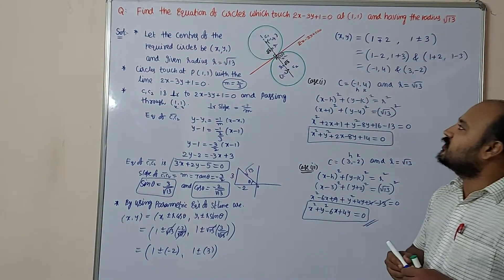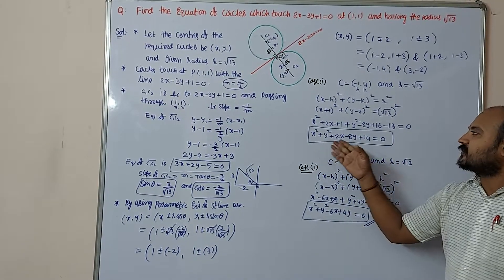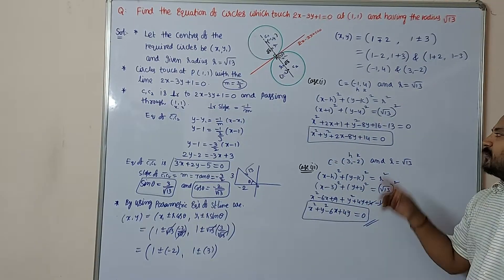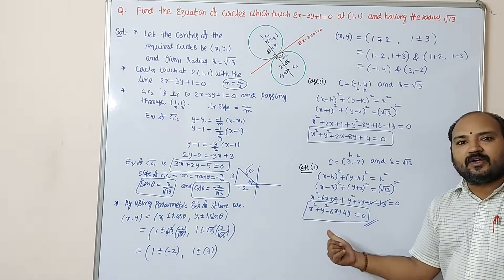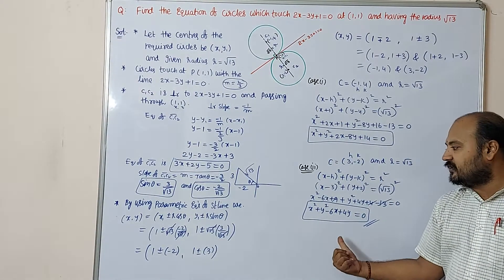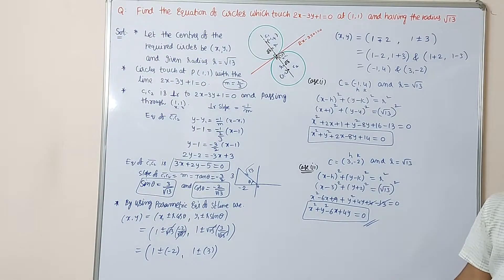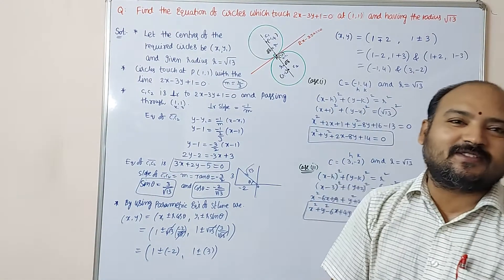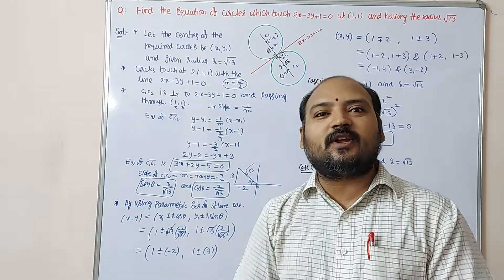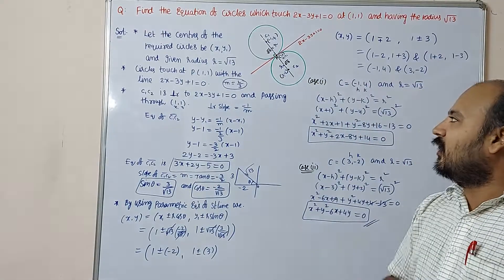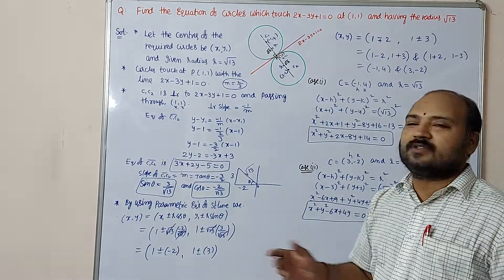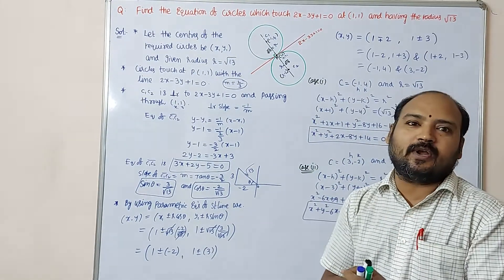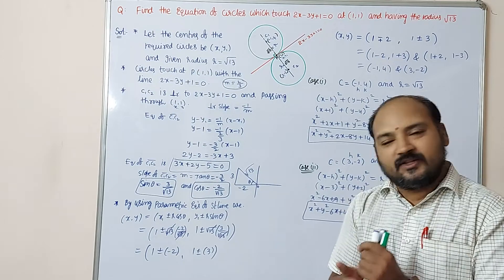Therefore the required equations of the circles are x² plus y² plus 2x minus 8y plus 4 equal to 0 and x² plus y² minus 6x plus 4y equal to 0. Thank you dear students — one of the students requested these example problems, that's why I am separately making these videos.